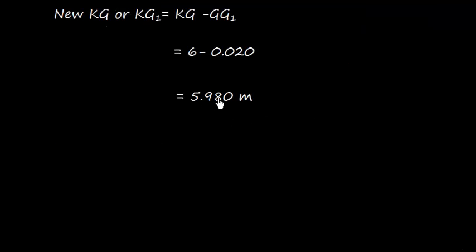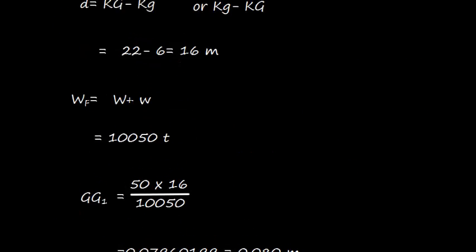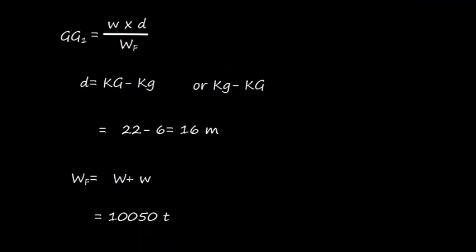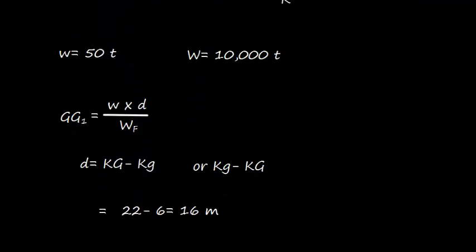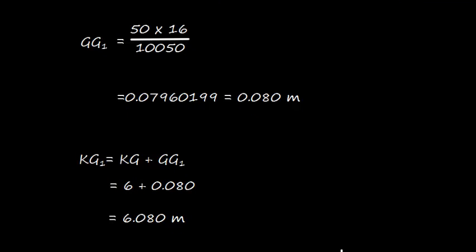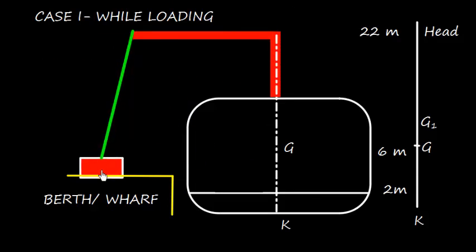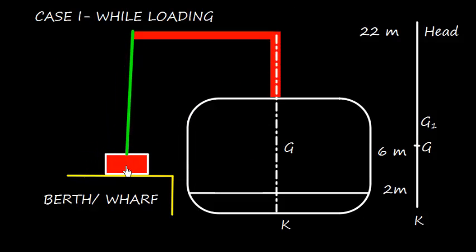So it is 5.980. We should also note that after loading, my KG is 5.980 meters. However, while loading, the KG was 6.080, so it makes sense also when the weight is at the berth.